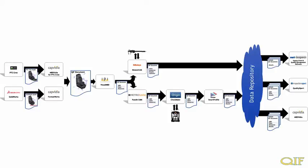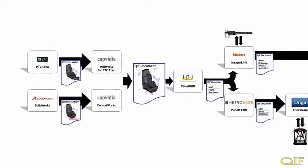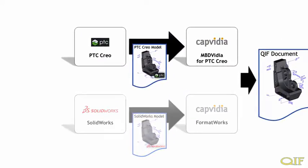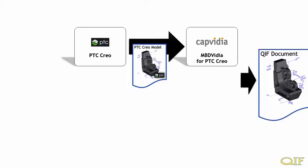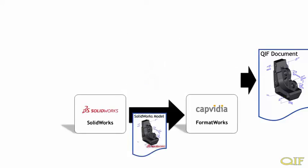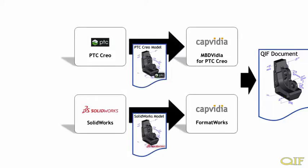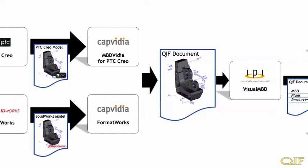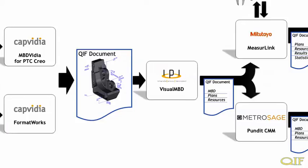A group of leading CAD and metrology software providers have teamed up to demonstrate a state-of-the-art digital metrology workflow for IMTS 2016. The starting point for this workflow is a CAD model with PMI in either PTC Creo or SOLIDWORKS. The following processes are then run through: the QIF model is generated, balloon numbers are added, and measurement resources are assigned to PMI.